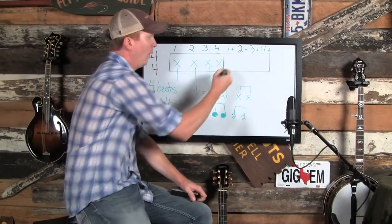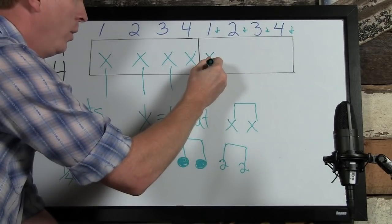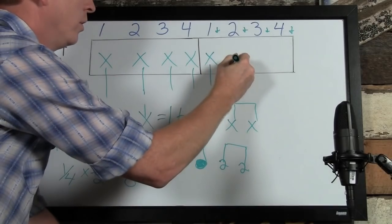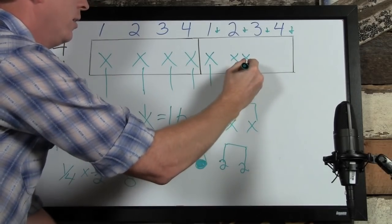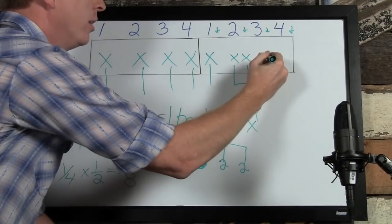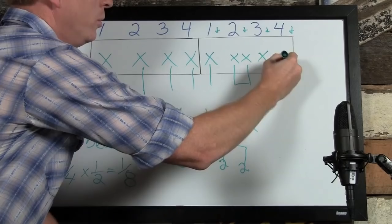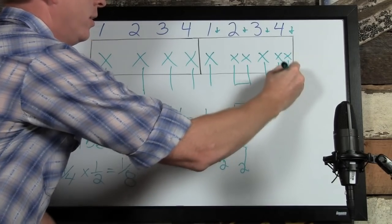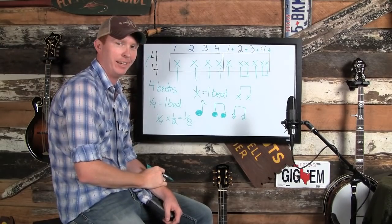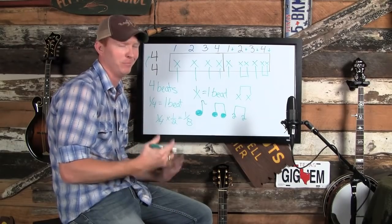Here's what I'd like to introduce: we're going to keep a quarter note on beat one. On beat two we'll introduce two eighth notes. On beat three — the bass note — we keep it as a quarter note. On beat four — the strum — we turn it into two eighth notes. Let's pick up the guitar and look at the difference between these. You'll see how it begins to bring new dimension to your rhythm and makes it a lot more fun to play.